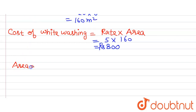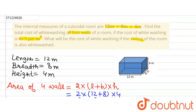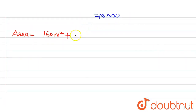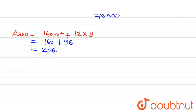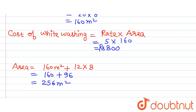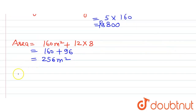The new total area equals the area of 4 walls, which is 160 meter square, plus the area of the ceiling. The ceiling is a rectangle with length 12 meters and breadth 8 meters, so its area = 12 × 8 = 96 meter square. Therefore, total area = 160 + 96 = 256 meter square.